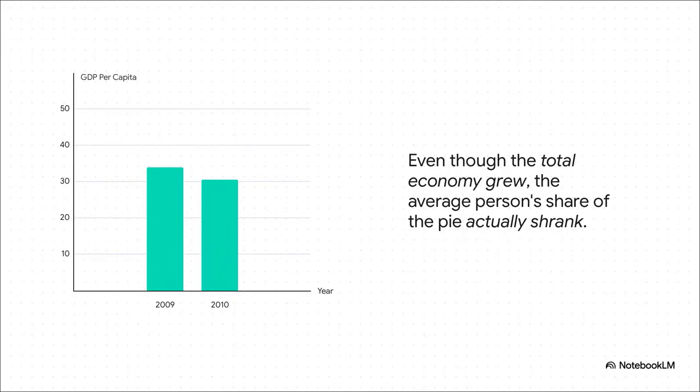This chart makes it crystal clear. The bar for 2010 is shorter. The GDP per capita fell. Now, why did that happen? It's simple, but it's so important. Our population grew by a whopping 25%, but our economy only grew by about 12%. The population growth outpaced the economic growth. So on average, everybody's individual slice of the pie got smaller.